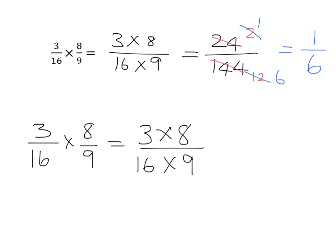Instead of going ahead and doing each multiplication, what I'm going to do is look at the whole lot at the top and the whole lot at the bottom. With fractions, if we divide top and bottom by the same thing, we don't change the fraction. So I'll see if there's anything I can divide into the numerator and denominator now, so I don't have to do the huge multiplication of 16 times 9. I can see I've got a 16 and an 8 — 8 can go into both. Dividing the top by 8 gives 1, and the bottom by 8 gives 2. I can also see the 3 and the 9, and 3 can divide into both, so I'll divide 3 into numerator and denominator.